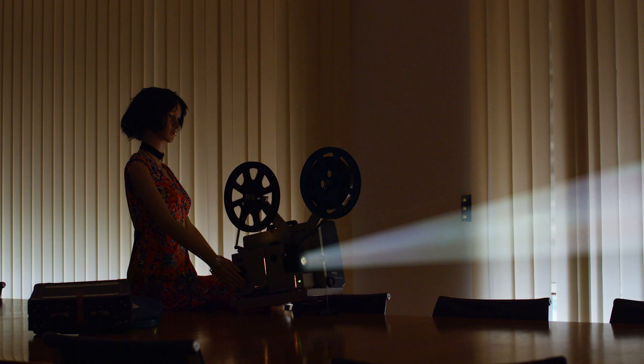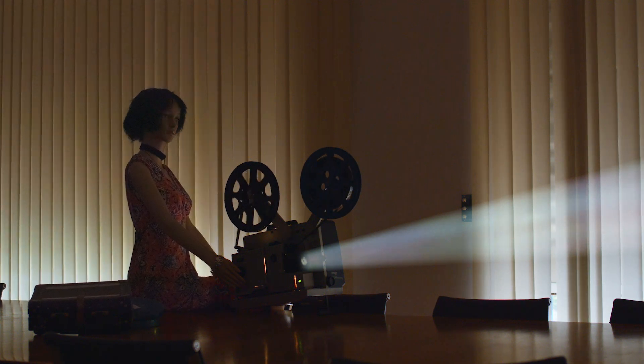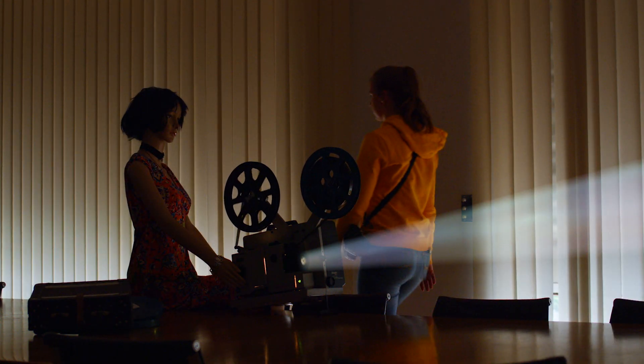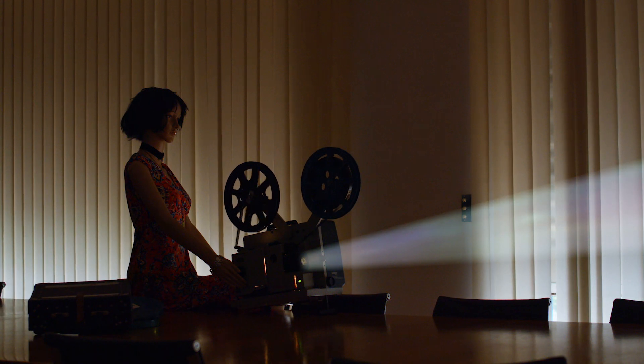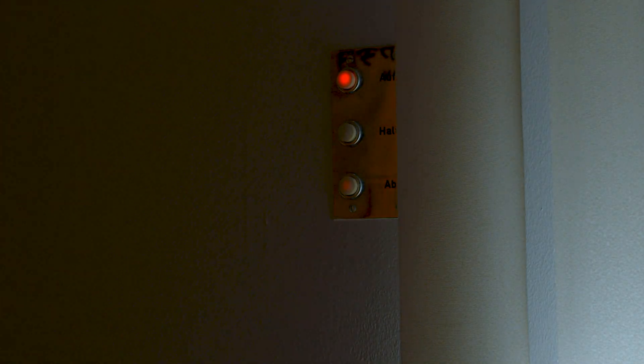Can we also digitize Super 8 negative material and edit it later? How do you get an absolutely flicker-free image and how do you get a look like we projected it onto a canvas screen with an old film projector?